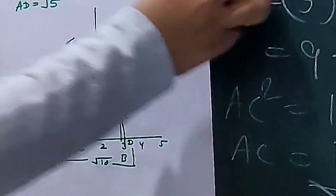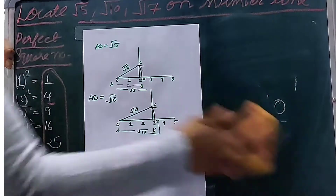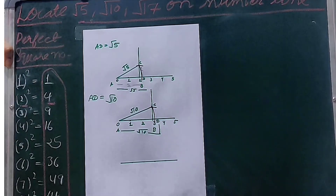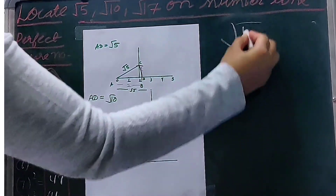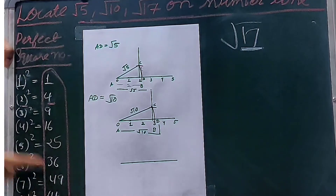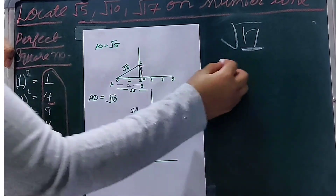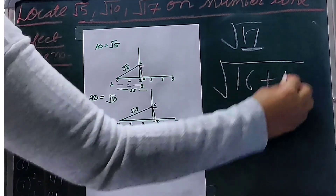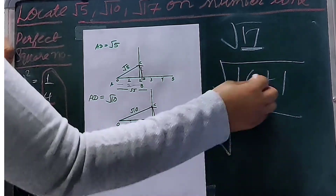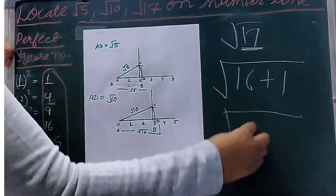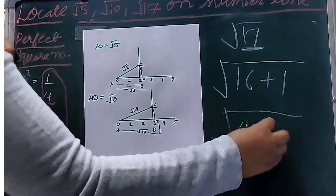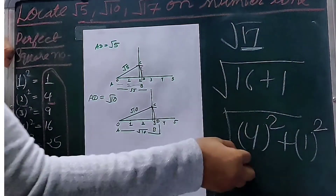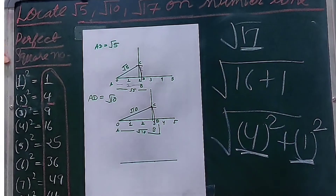Now I will show you how to locate root 17 on the number line. As you can see, root 17 is nearest to 16. So we can write it like 16 plus 1. Because 16 is the square of 4, we can write it like 4 squared plus 1 squared. For root 17, we have two numbers: 4 and 1.